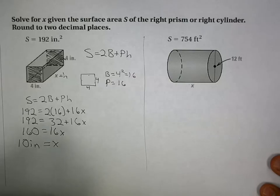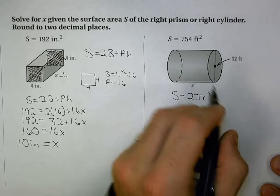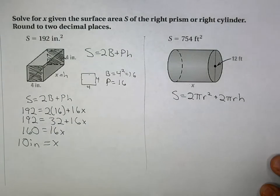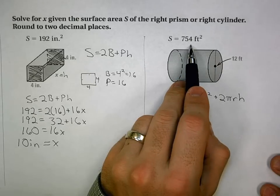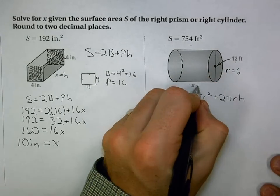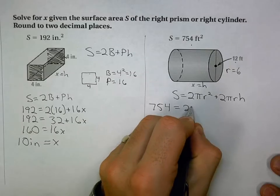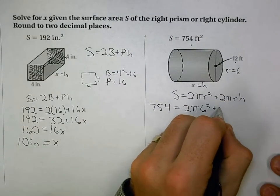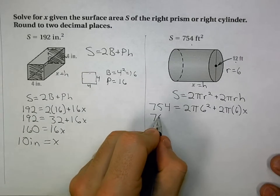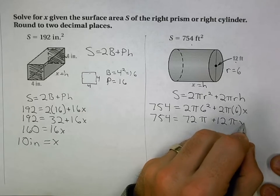For a cylinder, we use the formula 2πr² plus 2πrh. The diameter is 12, so radius is 6, and height is x. When I plug in what I know, I have 754 equals 2π times 36 plus 2π times 6 times x.